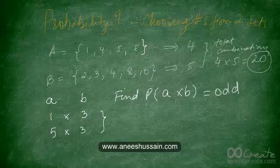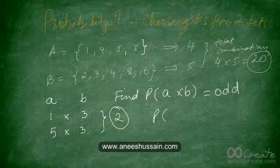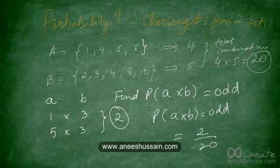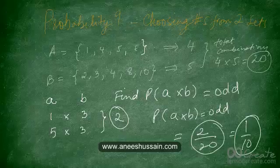Number theory tells us that to get an odd product, both numbers must themselves be odd, because multiplying an even number with any number gives an even result. So A has to be odd and B has to be odd. The only combinations that work are 1 and 3, and 5 and 3 — just two combinations. Therefore the probability that A times B is odd is 2 out of 20, which is 1 out of 10.